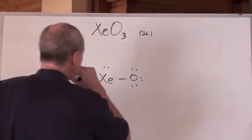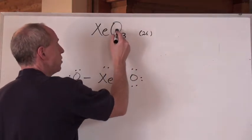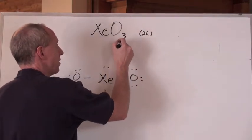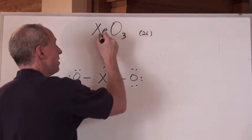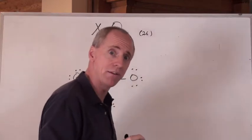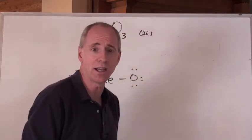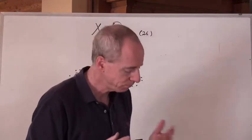26 is the number of valence electrons, because oxygen's in group 6 times 3 is 18, plus 8 for xenon in group 8 — total of 26, 18 plus 8.